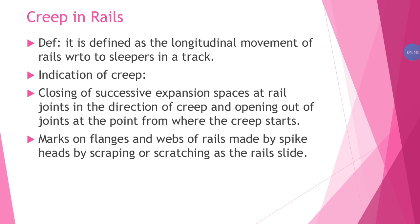So at the rail joints, the end of the joint creep relieves out the other side — it is closing the successive expansion. So load on the rail will expand on the other side, and then a bubble forms and some minute expansion will be observed. The rail joint will close and the next joint will start. Marks on flanges and webs of rails are made by spike heads by scrapping or scratching as the rail slides.